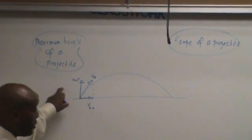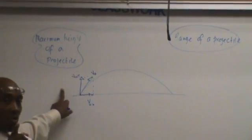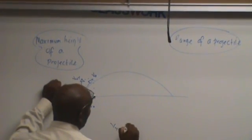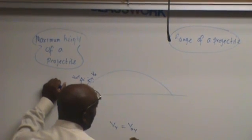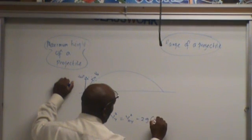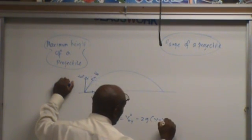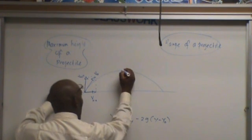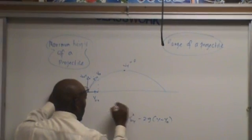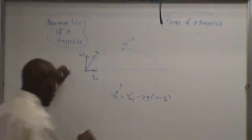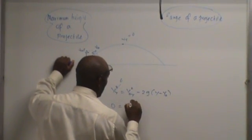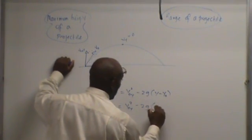So we need the height. We need the velocity — the equation that has the height in it. And the one that has it is: v_y² equals v₀y² minus 2g(y minus y₀). And we know that at the top, v_y is zero. So that's zero right there. We did a problem like that last time. So zero equals v₀y² minus 2g·y.